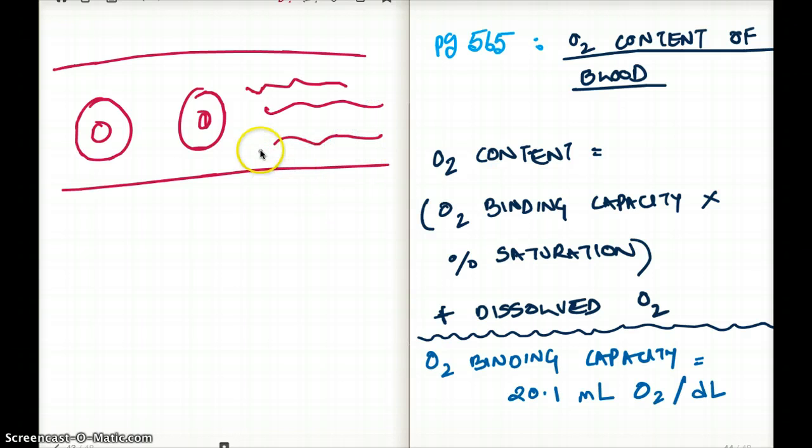When we think of blood, we actually think of both RBC and plasma together. So oxygen can be in two places: oxygen can be bound to the RBC, or oxygen can be dissolved in the plasma.